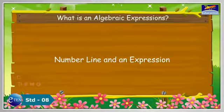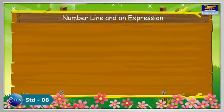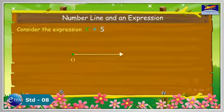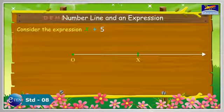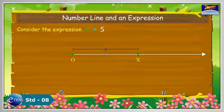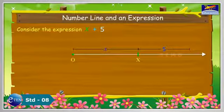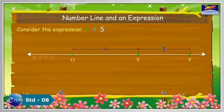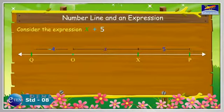Number line and expression. Consider the expression x + 5. Let the variable x have a position on the number line. x may be anywhere on the number line, but the value of x + 5 is given at point P, which is 5 units to the right of x. Similarly, the value of x − 4 will be 4 units to the left of x.